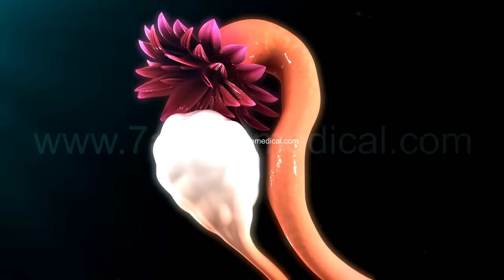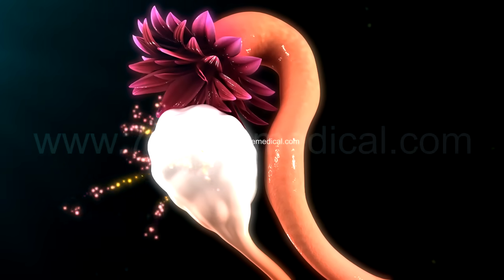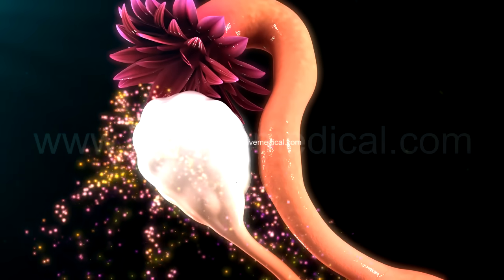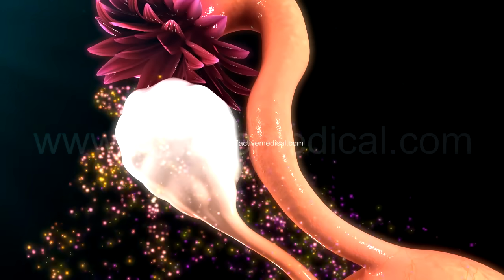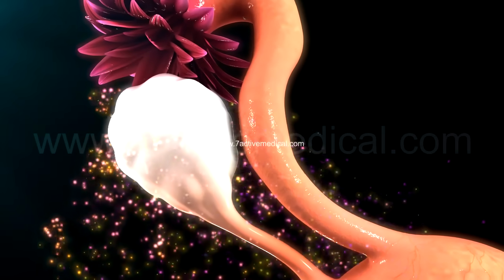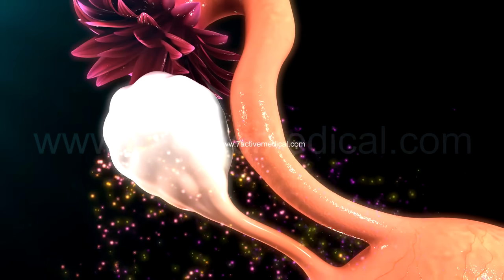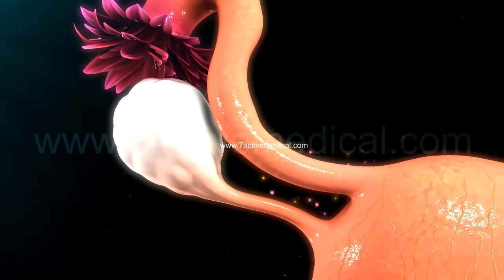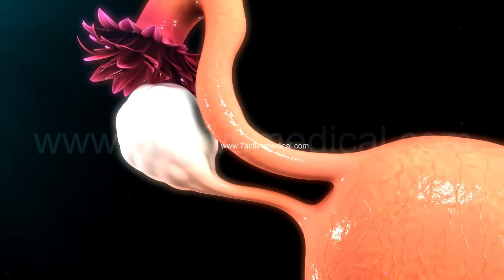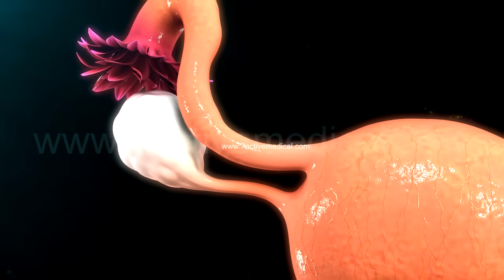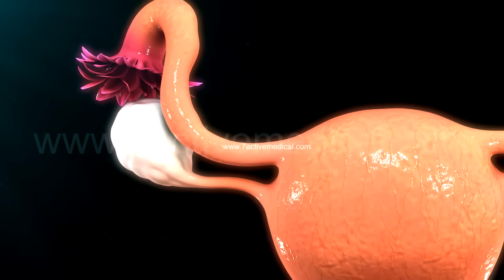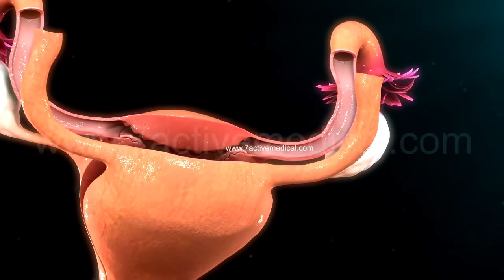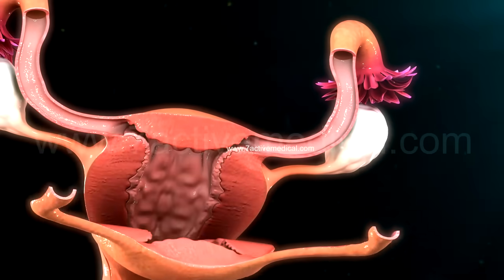After the follicle ruptures, it is converted into a structure known as the corpus luteum, which secretes the hormone progesterone. Progesterone creates important changes in the endometrial lining of the uterus, making it suitable to receive the fertilized egg.